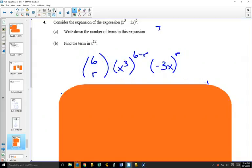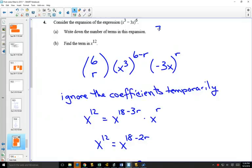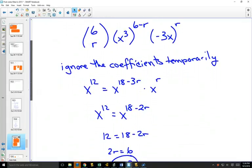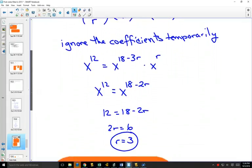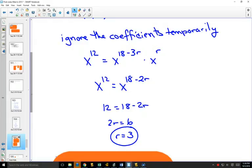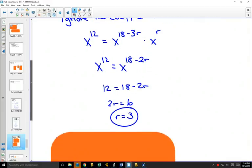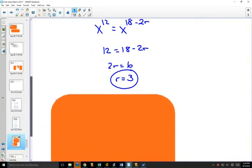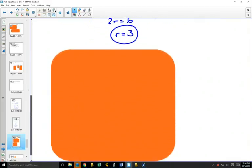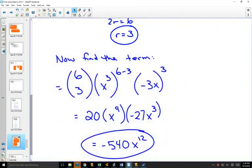Term with x to the 12. There's the formula idea. Again, I'm going to ignore the coefficient temporarily. Should have got r is equal to 3, so that's term 4. And then solving for it would have been negative 540x to the 12th.